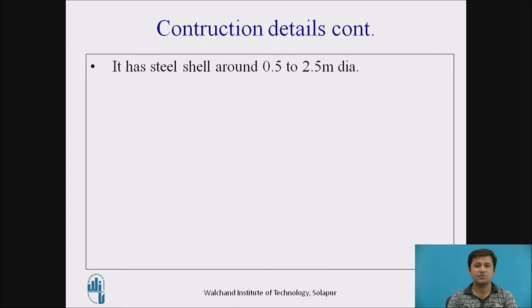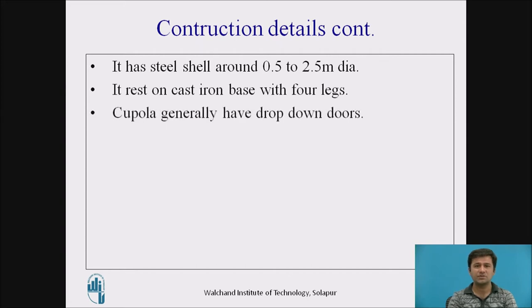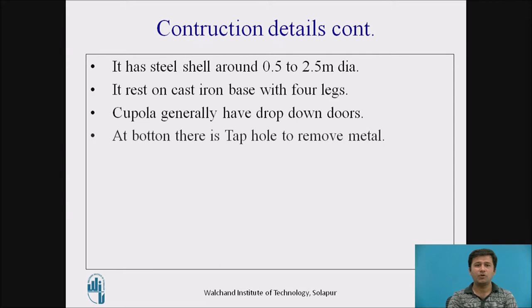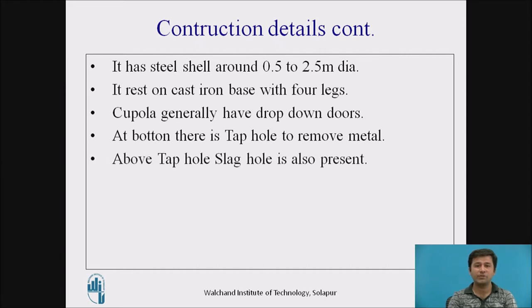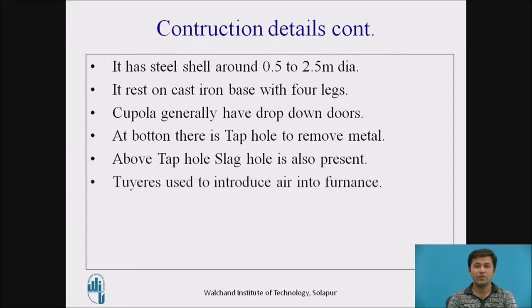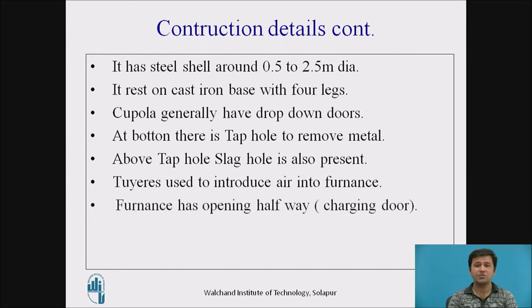In summary, the cupola is a steel shell of around 0.5 to 5 meters in diameter, resting on a cast iron base with four legs. It generally has drop-down doors at the bottom. There is a tap hole to remove metal, and above that is the slag hole — the slag hole is always placed above the tap hole because slag is lighter in weight. Two tuyeres are used to introduce air into the furnace, and there is a charging door halfway up. The top is covered with a spark arrestor.